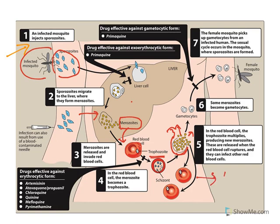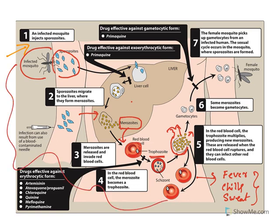This stage is where the typical symptoms of malaria are seen — fever, chills, and sweats. When people experience these symptoms, it indicates malaria has progressed through all stages: it has entered the blood, developed in the liver, gotten into the red blood cells, and caused RBC rupture, which results in these symptoms.